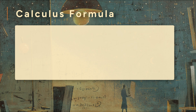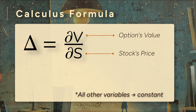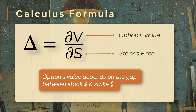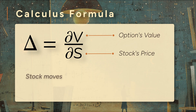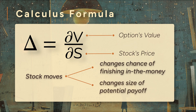In the language of calculus, delta is the first-order partial derivative of the option's value, V, with respect to the stock's price, S. This formula simply isolates the effect of the stock price on the option's price, assuming all other variables like time and volatility remain constant. Why does this relationship exist? Because an option's value is fundamentally linked to the difference between the stock price and the strike price. As the stock moves, it changes the probability of the option finishing in the money, and it changes the potential size of that payoff. Delta is the single number that quantifies this sensitivity.